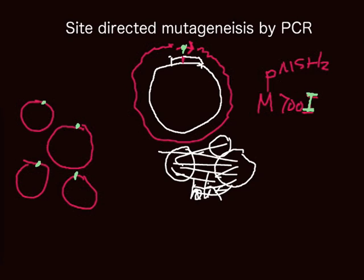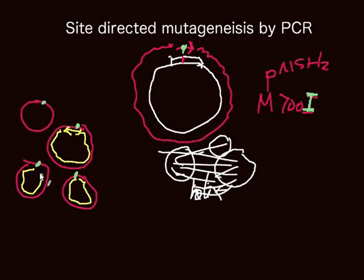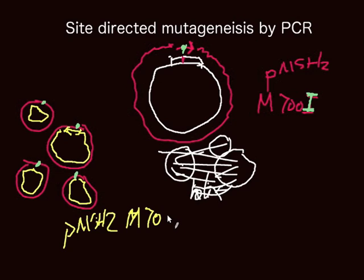What's remaining is the single-strand plasmid with the isoleucine mutation. Then we can find another primer — using a different color here — and we can use a reverse primer and synthesize the remaining part. Then we will have a mutant plasmid, and we can call that pMSH2 — say MSH2-707i. But here's the principle. I hope it's helpful. Thank you very much.